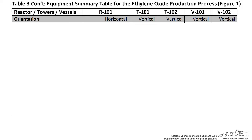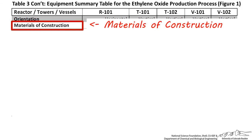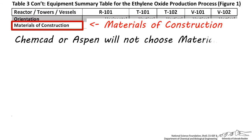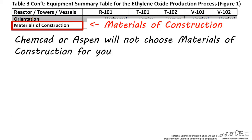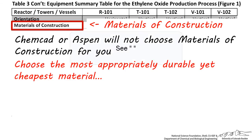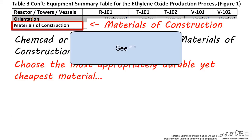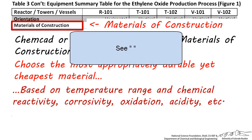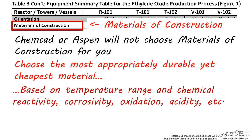Let's next look at specifying materials of construction. Again, ChemCAD or Aspen will not select these for you, so we must look at the temperature and chemical composition of the streams coming in and going out of these units to determine the most durable yet cheapest material to use. Be sure to base your selection on the temperature range of the streams, their chemical reactivity, potential for corrosion or oxidative damage, and pH.